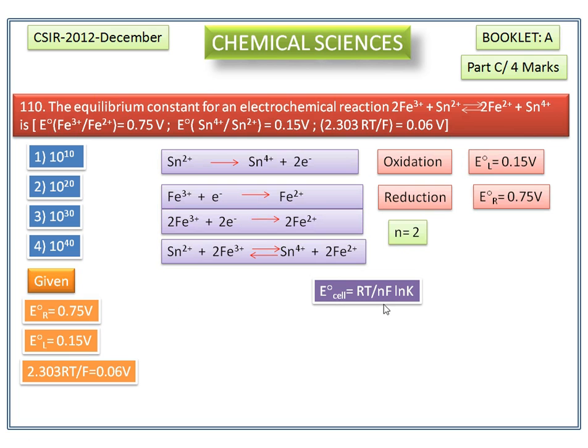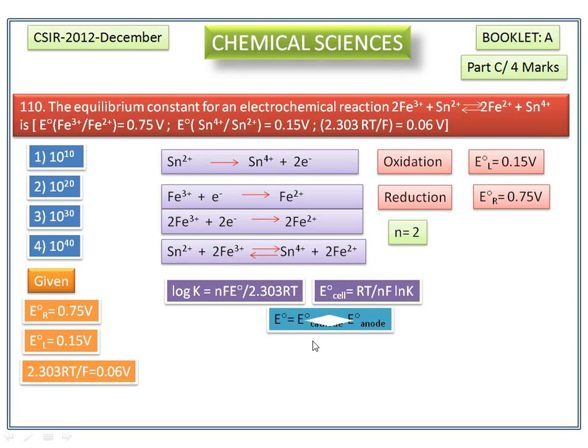By rearranging this equation in terms of log K, we get nE° divided by 2.303RT. Now we calculate E° cell. E° cell can be calculated by E° cathode minus E° anode, or E° cell is equal to E°R minus E°L.